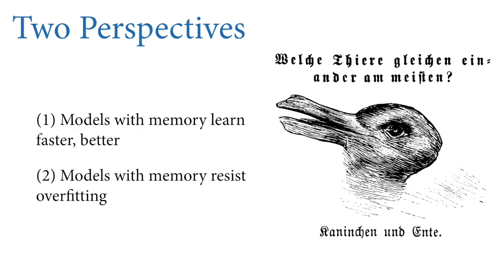Expectations help us learn faster because when expectations are violated, that surprising result tells our little Bayesian machines to update more. There are really two perspectives on why we would like our models to have a kind of memory that creates expectations and can have them violated. Both are simultaneously true.